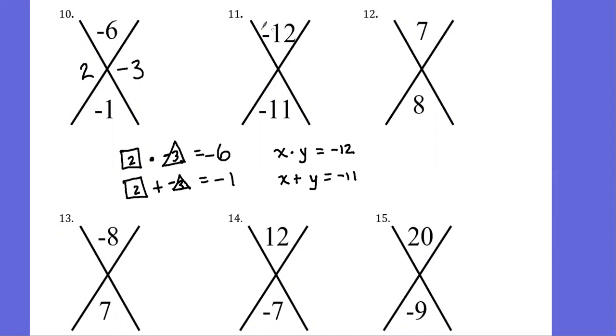So if I'm getting negative 12 here with my product, I know that I have to have one value that's negative and one value that is positive. And if I start thinking through my factors of negative 12, first one would be one and 12, and notice that I will be able to use those two values to add to give me negative 11.